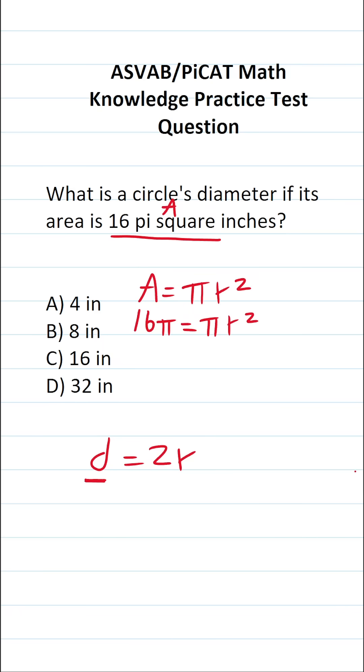Clearly, we can determine what the diameter of this circle is if we know its radius. So we're going to be solving this equation for r. The first thing I'm going to do is divide both sides of the equation by pi. This crosses out, leaving me with r squared over here. These pi's cross out, leaving me with 16 over here.